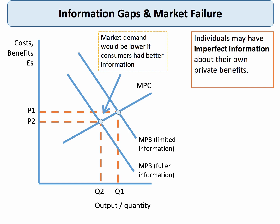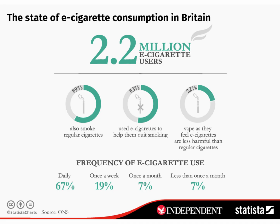Demerit goods tend to be over-consumed in the free market partly because of information failure, leading to a misallocation of resources as too many scarce resources are devoted to demerit goods. Consumers may be ignorant of the health consequences of smoking, or perhaps aware but often not fully so. E-cigarettes are currently in the news — are they a demerit good, a merit good, or neither?